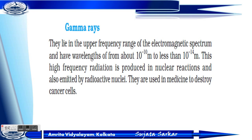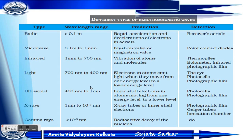Gamma rays lie in the upper frequency range of the electromagnetic spectrum, with wavelengths from about 10^-10 meters to less than 10^-14 meters. This high-frequency radiation is produced in nuclear reactions and is also emitted by radioactive nuclei. Gamma rays are used in medicine to destroy cancer cells.